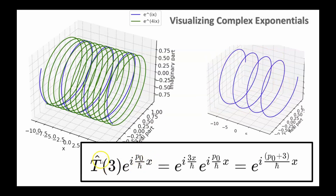If I want to take it to a new momentum state, I would operate on this state by the momentum translation operator, replacing epsilon with three, and this gives me a new function with higher momentum. This new function is the red function. You can see the red function has more turns per unit length — it's a higher momentum state. The momentum translation operator translated the function from the blue state to the red state, moving it from one momentum state to a higher momentum state. You could also move it to a lower momentum state with T of minus three or T of minus 0.1.